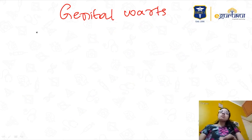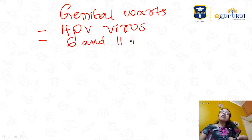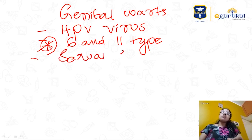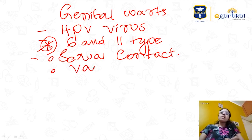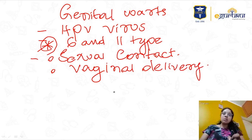Genital warts are most commonly caused by HPV virus. The most common types are 6 and 11 — this is an important point. The most common route of spread is sexual contact. It can also spread from mother to child at the time of vaginal delivery — not caesarean — so this can be twisted into a question.